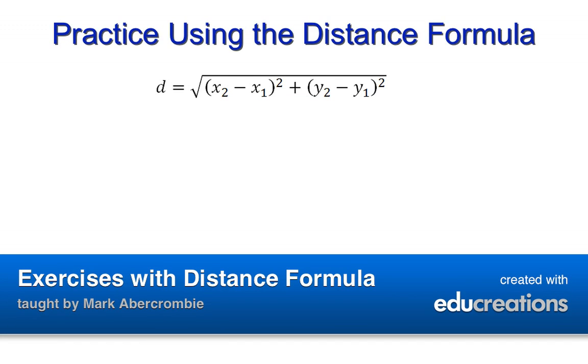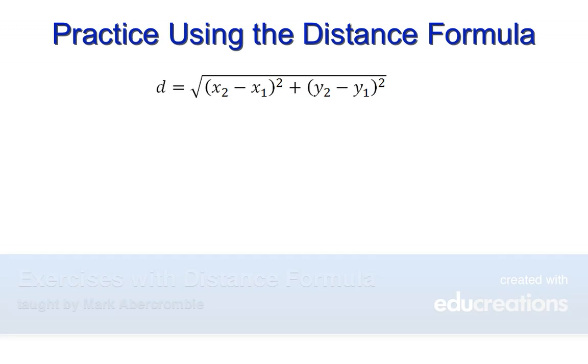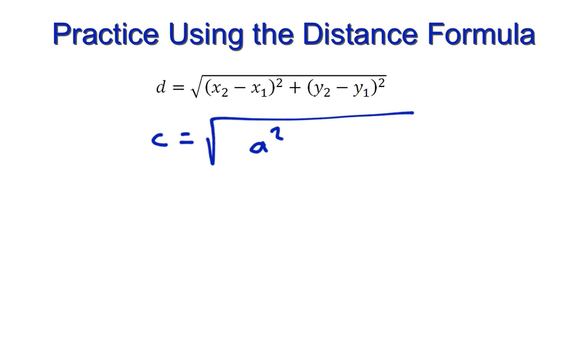We should recall that from yesterday, the distance formula was derived from the Pythagorean Theorem, where essentially what we had was this was c, and it was equal to the square root of a squared plus b squared.